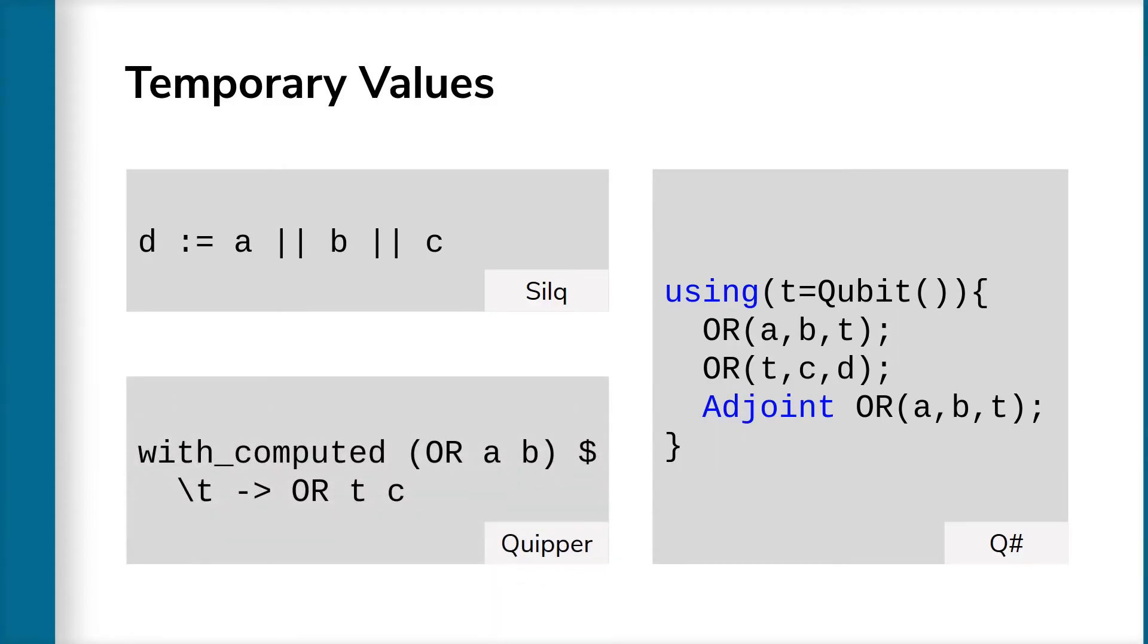As one might expect, some languages have realized that this explicit uncomputation is tedious and unintuitive. For example, Quipper has introduced the with-computed function, which computes the OR of A and B, names the result T, computes the OR of T and C, and then implicitly uncomputes T. However, the programmer still needs to explicitly call with-computed, which clutters the code and can lead to unintended errors.